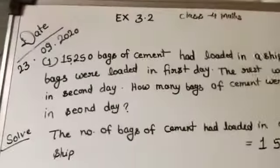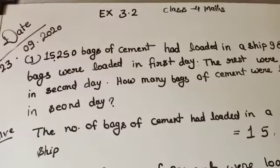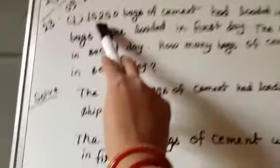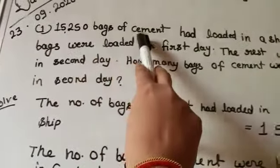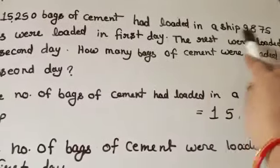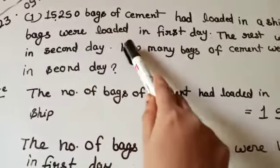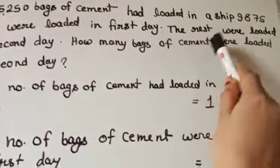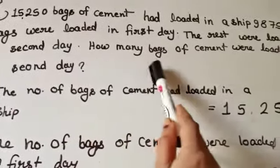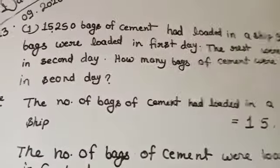Good morning, my dear students. Today we will start our new exercises: 3.2, question number one, class 4 maths. 15,250 bags of cement had been loaded in a ship. 98,875 bags were loaded on the first day. The rest were loaded on the second day. How many bags of cement were loaded on the second day?